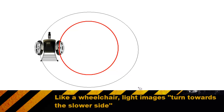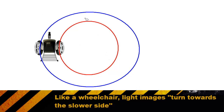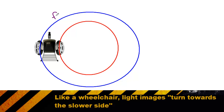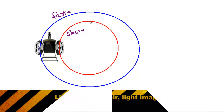By drawing both the track for the inside and outside wheel, it becomes clear the outside wheel — the blue path — is much longer than the inside red path. Because both wheels are traveling at the same time, the outside wheel has to travel faster and the inside wheel turns slower. So the basic concept is: when part of an object moves fast and another part moves slow, the object will turn towards the slower side.